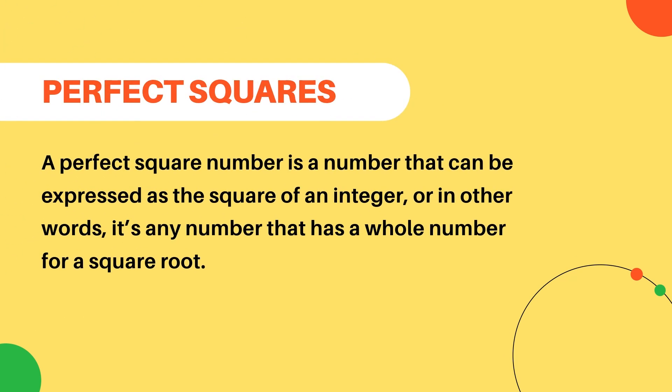Perfect square numbers make this a lot easier. A perfect square number is a number that can be expressed as the square of an integer, or in other words, it's any number that has a whole number for a square root.